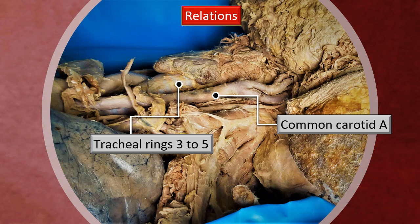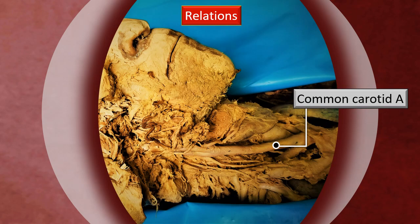You can see the huge size of the artery. At the level of the thyroid cartilage, it divides into an external carotid and an internal carotid artery. This is the right side lateral view, and you can see the same common carotid on the right side.